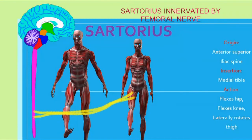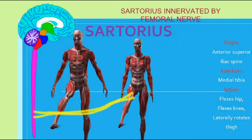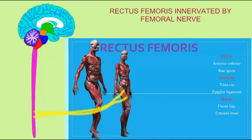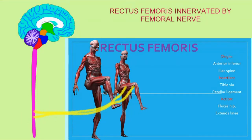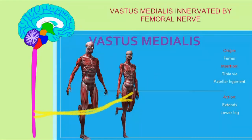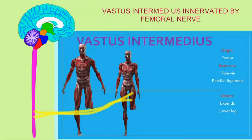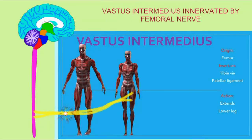The sartorius muscle is innervated by the femoral nerve. The rectus femoris is innervated by the femoral nerve. The vastus medialis is innervated by the femoral nerve. The vastus intermedius is innervated by the femoral nerve.